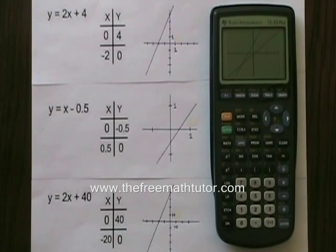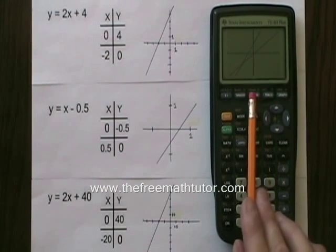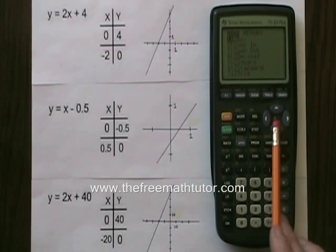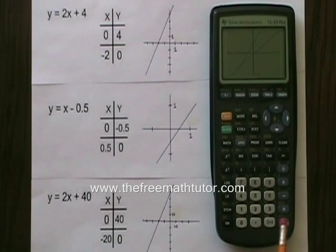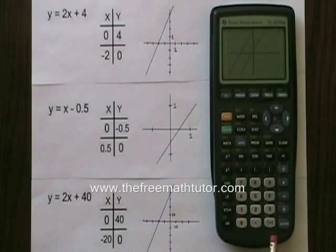But I can only see two of them. And that is because of the scaling on the graph. If I want to be able to see the third line, I'm going to have to zoom out. I'm pressing the zoom button again. This time I go down to number 3, zoom out. I hit enter to choose it. And if I hit enter again, I'm going to zoom out. And I can see all three lines at once.